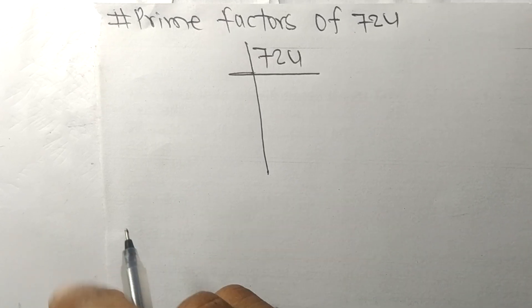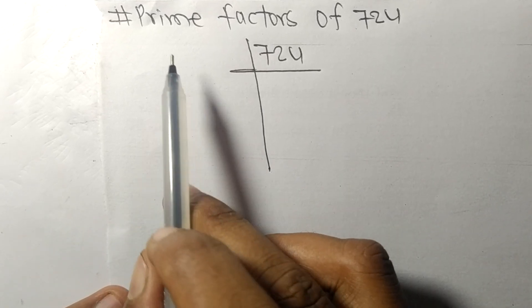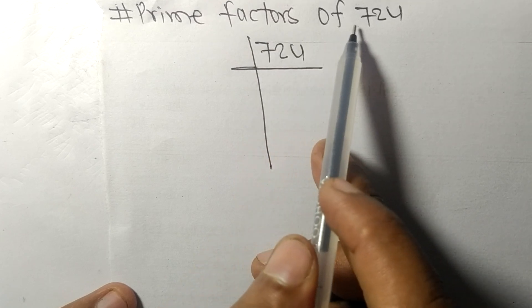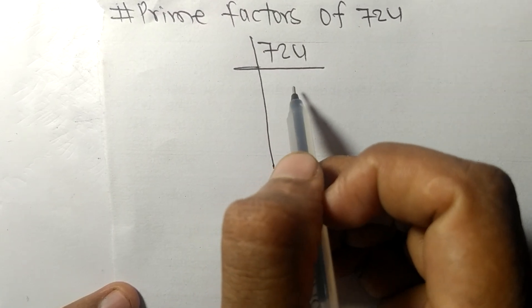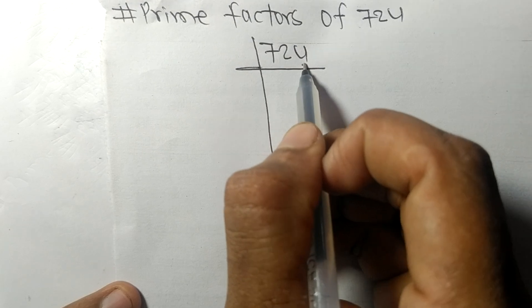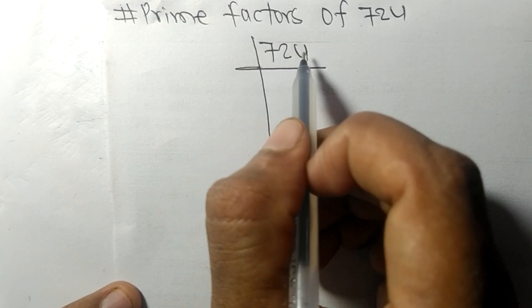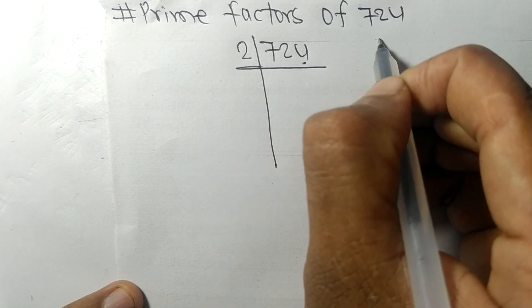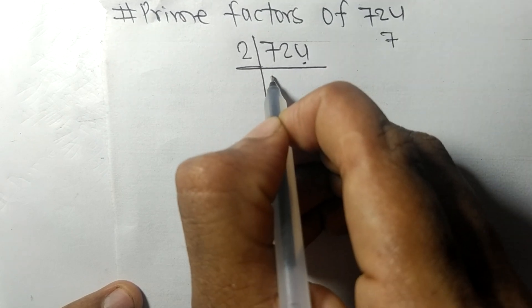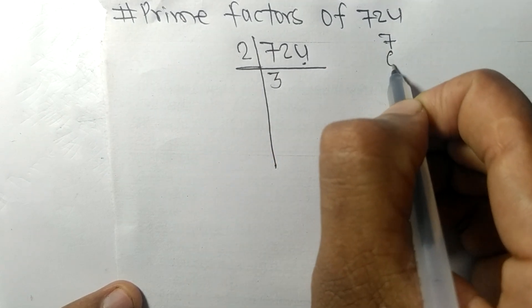So today in this video we shall learn to find the prime factors of 724. At last it contains an even number 4, so this whole number is divisible by 2. So we have 7, 2 times 3 means 6, remainder 1.